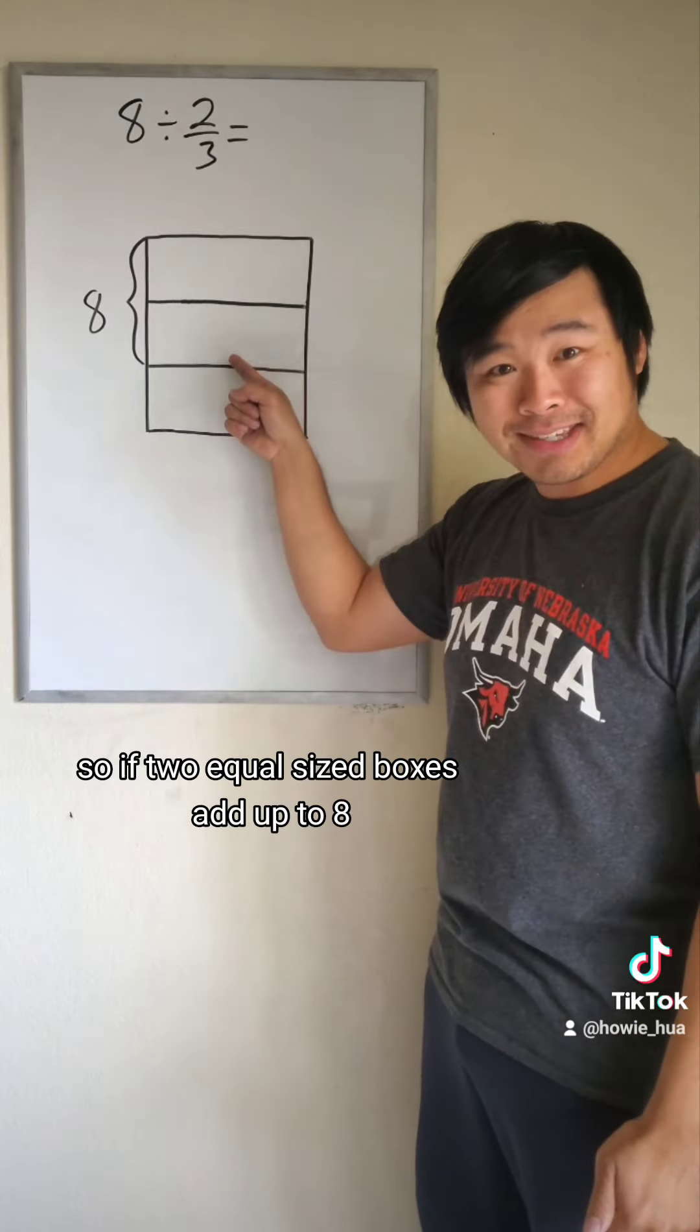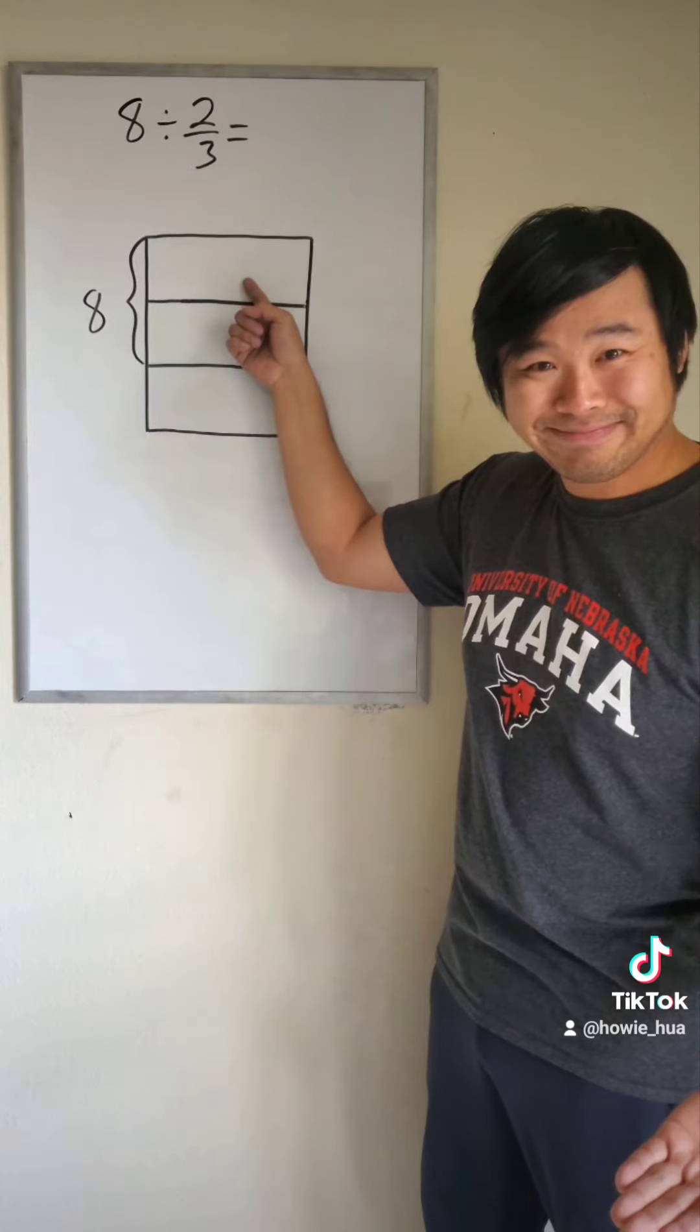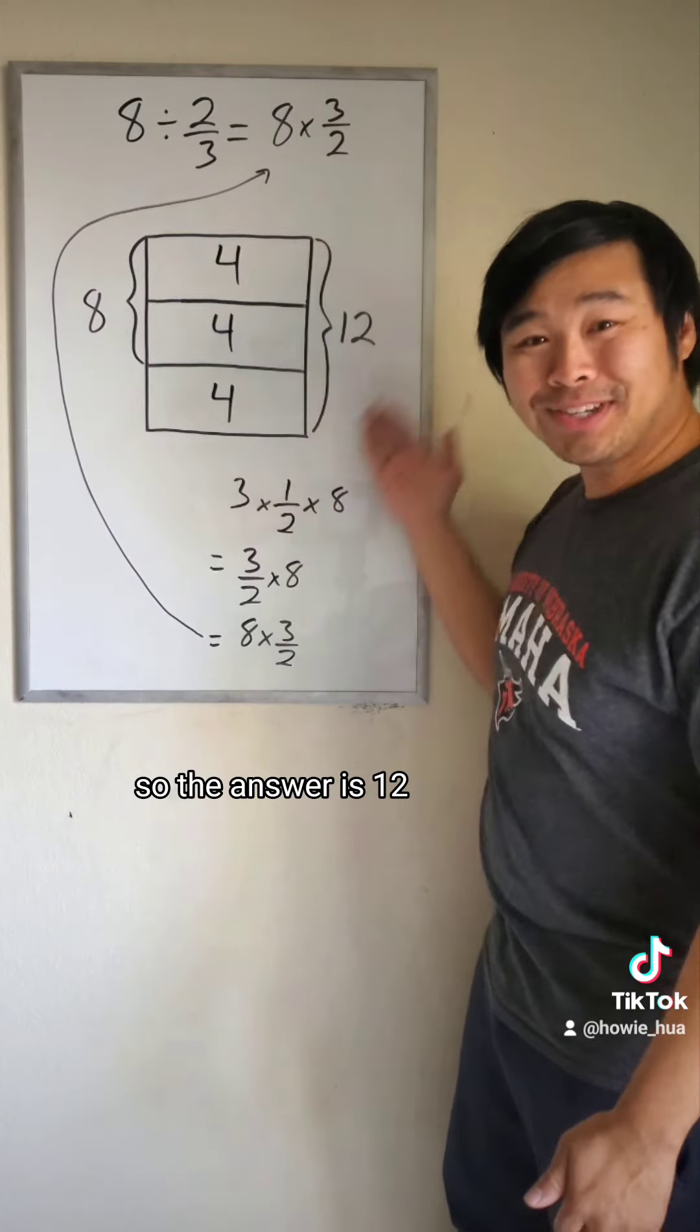So if two equal-sized boxes add up to 8, then each of these boxes would be worth 4. And there's 3 of them, so the answer is 12.